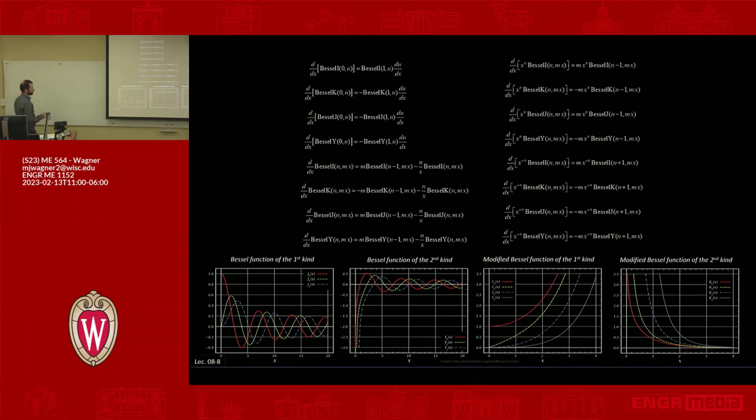One more thing on Bessel functions—can't really read this, but what this slide is giving you is: if you want to know the derivative of Bessel I, let's say Bessel I of the first kind, it's given here. So it's Bessel I of the second kind times the derivative of the argument. This is just a table that you can use to evaluate derivatives if you don't have a computer handy.